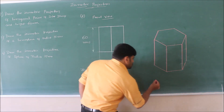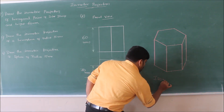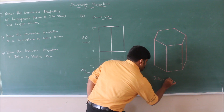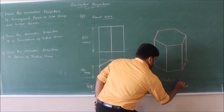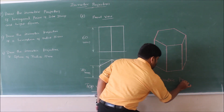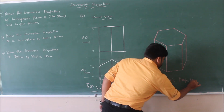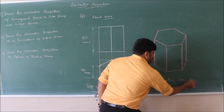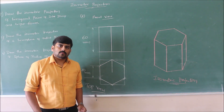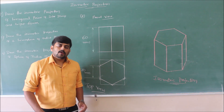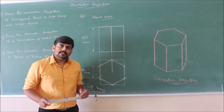This is the final isometric projection of the hexagonal prism. This completes problem number two. Now moving on to problem number three.